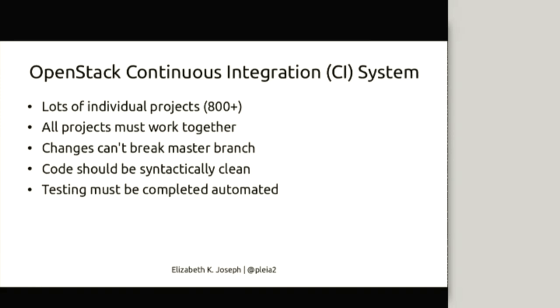When we started this infrastructure team, we were thinking: what can we do to leverage the OpenStack continuous integration system we already have? OpenStack's CI system itself has over 800 projects — it may be 850 or so now. In OpenStack, since it's a modular cloud thing, all the projects have to work together. So we're doing a lot of integration testing and functional testing between the projects.